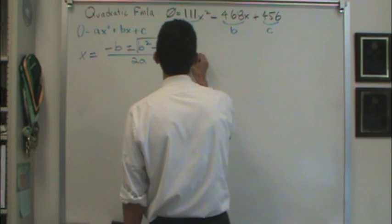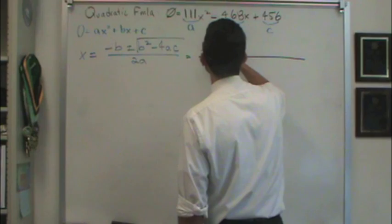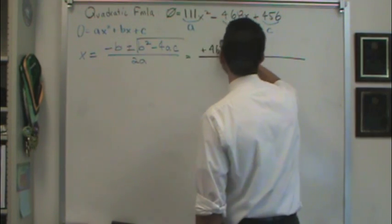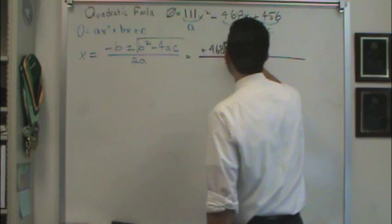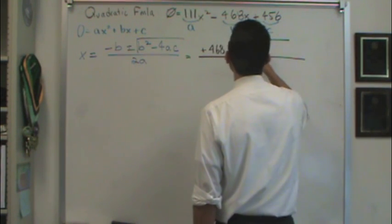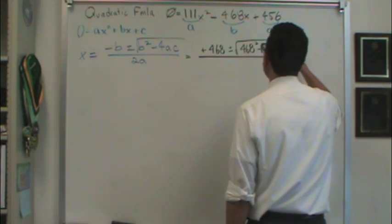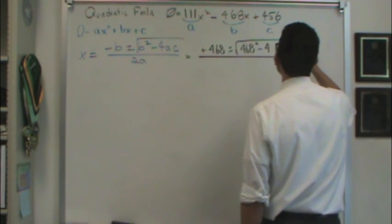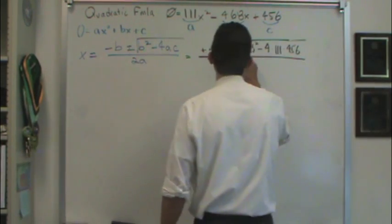So let's plug in and see how this works. We've got negative b, which in our case would be 468 positive. See, a, b, and c are all labeled, plus or minus the square root of b squared, 468 squared minus 4 times a times c. So you should be able to set that up and divide it by 2a.